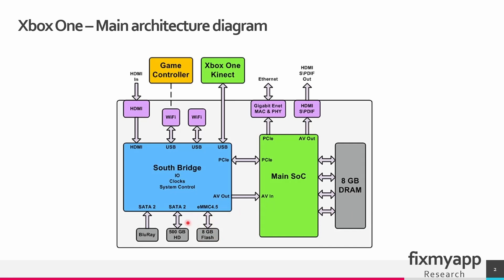Then we have the eMMC flash memory. eMMC stands for multimedia controller. It is a type of storage used on the Xbox. It's a flash memory, so it's soldered directly on the console's motherboard and it is not removable, so you cannot upgrade it or replace it. Then we have 8 gigabytes of DRAM. This type of memory is used to store temporary data that is actively used by the system and the games being played. It's a volatile memory, which means it requires a constant supply of power in order to maintain its content.